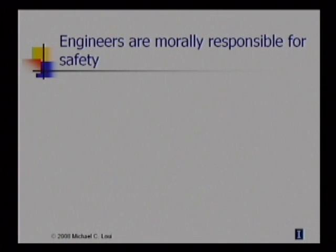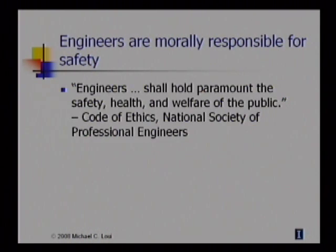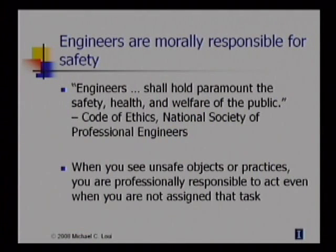All engineering codes of ethics prioritize the safety of the public as the most important professional responsibility of the engineer. For example, the code of ethics of the National Society of Professional Engineers says that engineers shall hold paramount the safety, health, and welfare of the public. That means no matter what other responsibilities engineers have — and they have many — the most important responsibility is to ensure the safety of the public. Furthermore, this obligation is shared among all engineers. So when you see unsafe objects or practices, you are professionally responsible to act, even when you are not assigned that task.